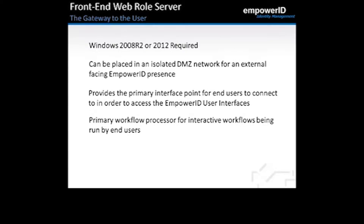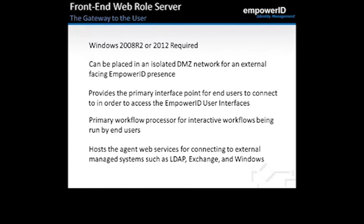When a user accesses the web interface and needs to run a particular workflow, we typically host the workflow engine on the web role server so the user can run that workflow directly on the local server. If using the web server internal to the network, you can also host agent web services for connecting to external managed systems such as Active Directory, LDAP, Exchange, and Windows. If placing the server in a DMZ, you would not have those agent web services active, passing that processing to internal servers to avoid opening those ports on the DMZ.